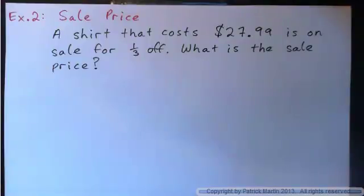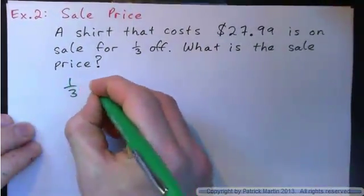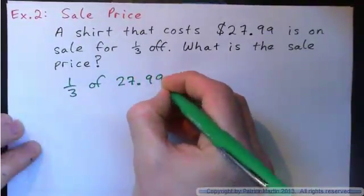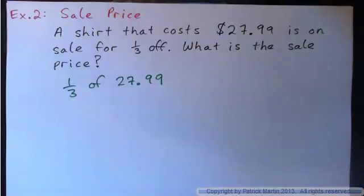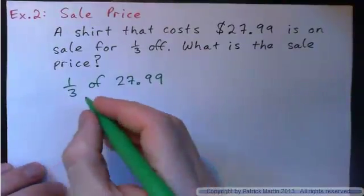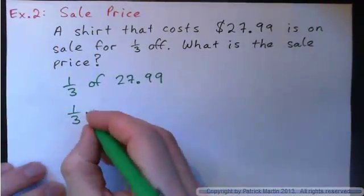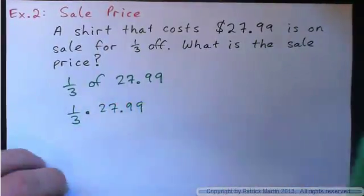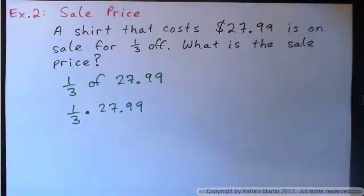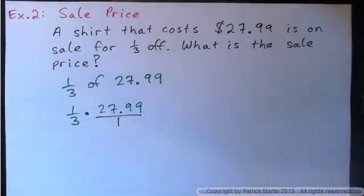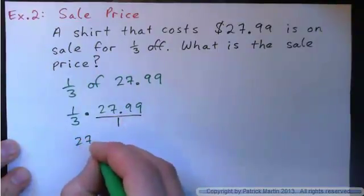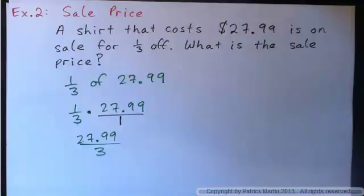Did you press pause and try it? What might you do? Okay, so you've thought about it. Twenty-seven ninety-nine. A third of that is going to be knocked off the price. Do you think we should get maybe one-third of twenty-seven point nine nine? Of means multiply, so I'm talking about one-third multiplied by twenty-seven point nine nine. Twenty-seven point nine nine is twenty-seven point nine nine over one. Basically what I have is one times twenty-seven point nine nine over three times one. So of course I have to divide that by three.